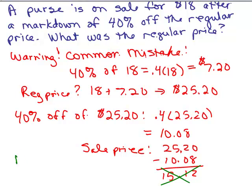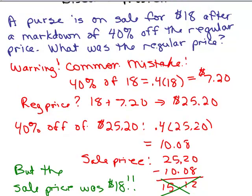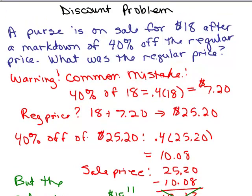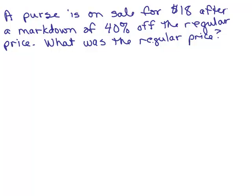That doesn't work, but the sale price was $18. So warning, when you're doing a discount problem, it has to be off the original price, just like when you're doing a markup problem, it has to be what you bought an item for originally before you marked it up. So this does not work. Be careful. Now let's do it the correct way.